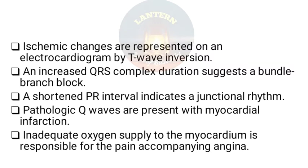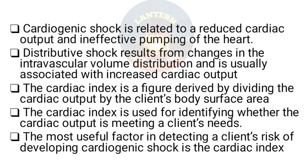Ischemic changes are represented on ECG by T wave inversion. Increased QRS complex duration suggests a bundle branch block. A shortened PR interval indicates a junctional rhythm. Pathologic Q waves are present in myocardial infarction. Cardiogenic shock is related to reduced cardiac output and ineffective pumping of the heart. Distributive shock results from changes in intravascular volume distribution and is usually associated with increased cardiac output. The cardiac index is derived by dividing cardiac output by the client's body surface area and is used to identify whether cardiac output is meeting the client's needs. The most useful factor in detecting a client's risk of cardiogenic shock is the cardiac index.